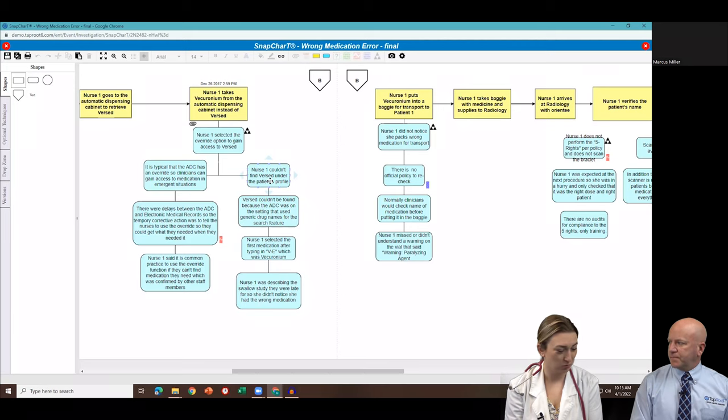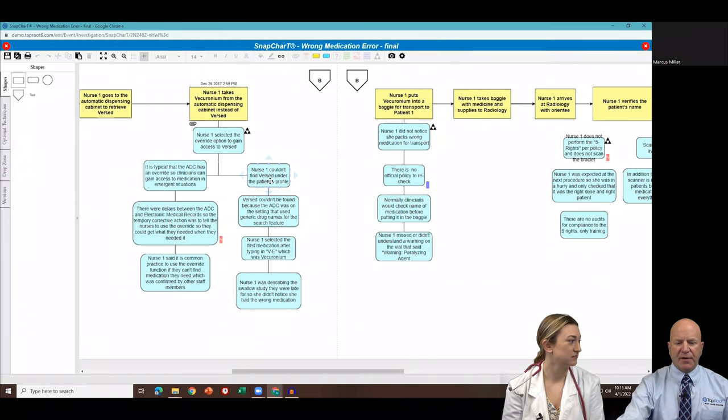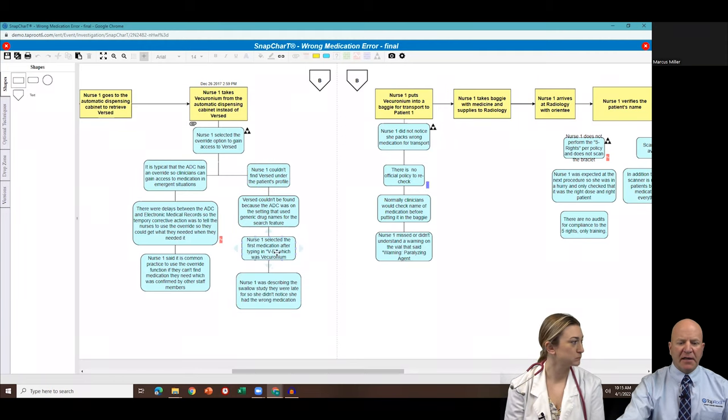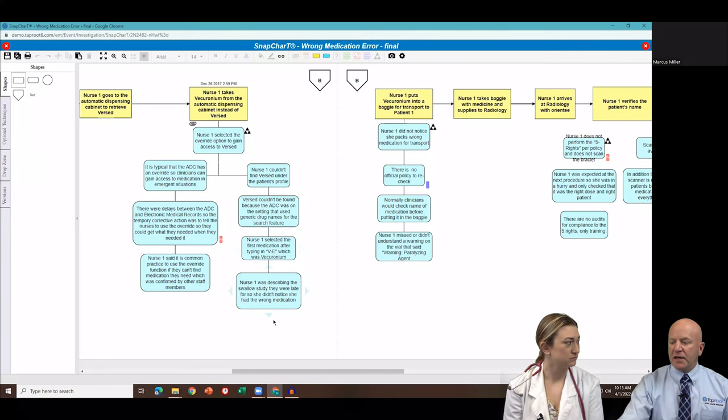I want to go back for a second. So you're talking about she couldn't find it under the profile. What does that mean for people who maybe aren't familiar what you're referencing? Right. So if she pulls up the patient, it should have the medications that have been prescribed and she should be able to pull those out. So the cabinet was actually set not on the brand names, it was set on the generic names. So that's why she couldn't find Versed with VE. And it wasn't under her profile. And there was also an issue with the syncing, the data, the records weren't coming over quickly. That's right.